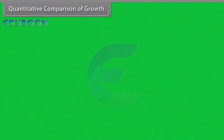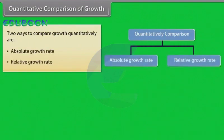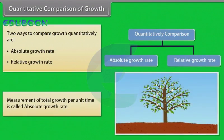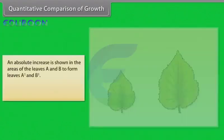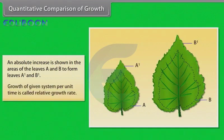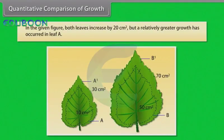Quantitative comparison of growth: Two ways to compare growth quantitatively are absolute growth rate and relative growth rate. Measurement of total growth per unit time is called absolute growth rate. An absolute increase is shown in the areas of leaves A and B to form leaves A1 and B1. Growth of a given system per unit time is called relative growth rate. In the given figure, both leaves increase by 20 cm² but a relatively greater growth has occurred in leaf A.